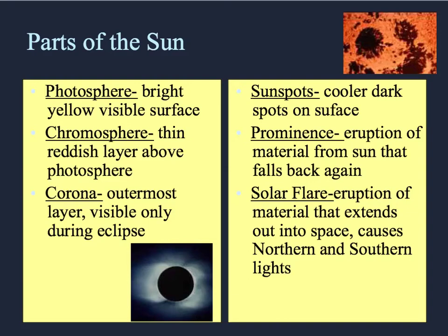Some major parts of the sun are the photosphere, that is our bright yellow visible surface. The chromosphere is the thin reddish layer that sits right above the photosphere. The corona is the outermost layer.